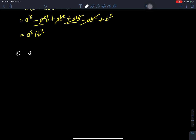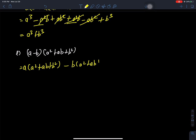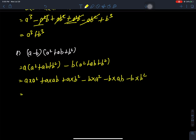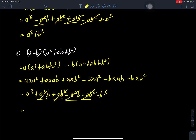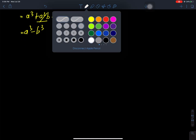Now: (a - b)(a squared + ab + b squared). We multiply: a times a squared, a times ab, a times b squared, minus b times a squared, minus b times ab, minus b times b squared. This gives a cubed plus a squared b plus ab squared minus a squared b minus ab squared minus b cubed, which simplifies to a cubed minus b cubed.